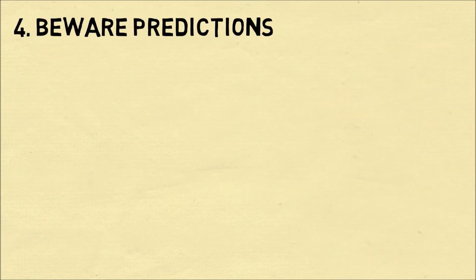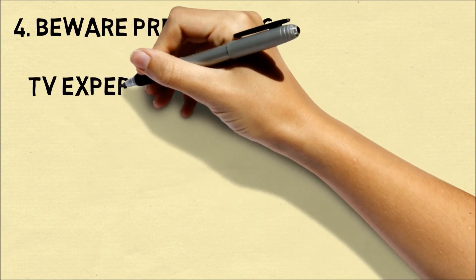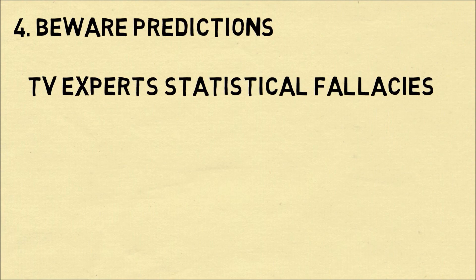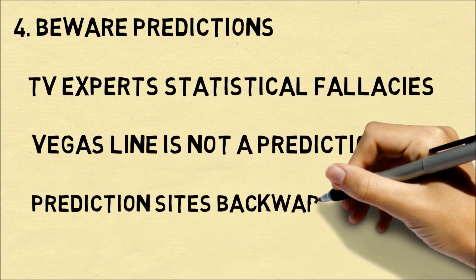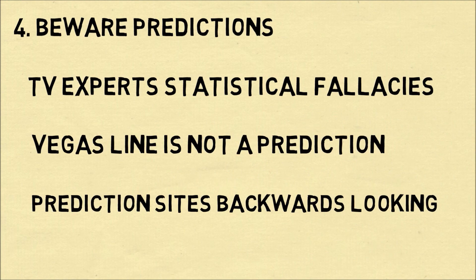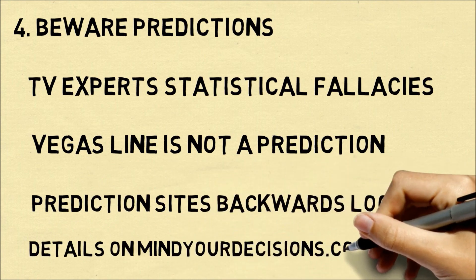Tip four: beware of expert predictions. TV experts will often say that a couple of made shots means a player is the hot hand, and a couple of missed free throws means they lack the clutch gene. TV experts don't always know what they're doing relative to the data. Also, the Vegas line is not a prediction of what will happen — it's a prediction of where the money bet on both sides will be roughly equal, which is close to a prediction of the game but not always the same. Additionally, prediction sites are always backwards-looking; if there's a rule change like the one-and-done phenomenon, they won't be able to take that into account quickly because they're using historical data.